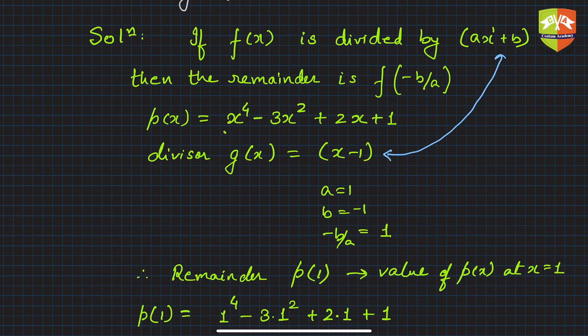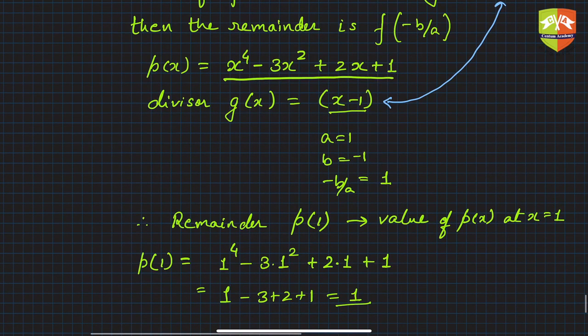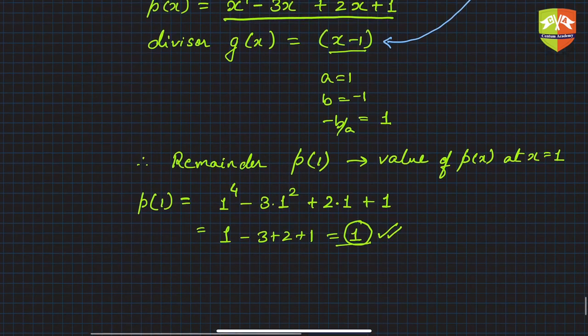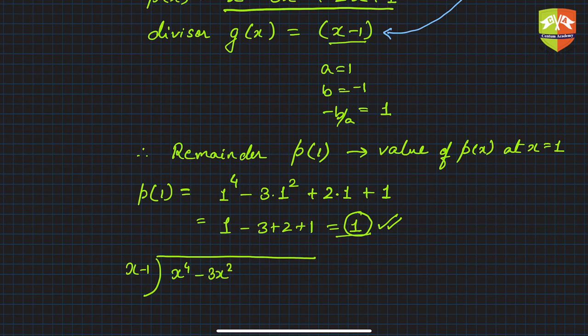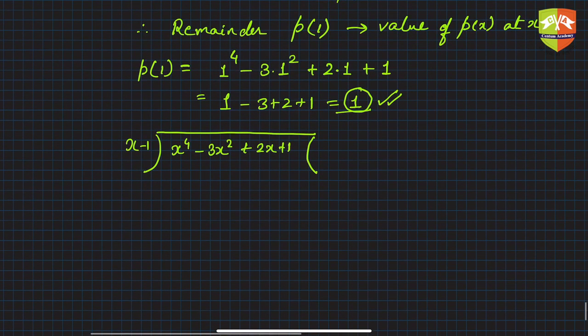You can check by actually dividing to verify that the remainder comes out to be 1. Let's use the long division method. Though we have studied synthetic division as well, we'll use long division for those who haven't learned it. So x^4 divided by x gives x^3.